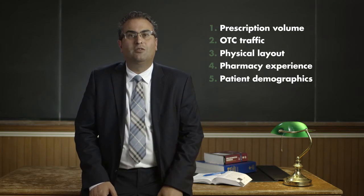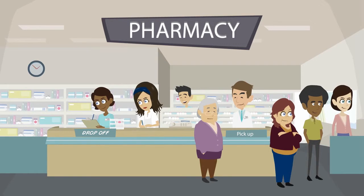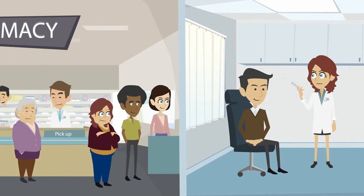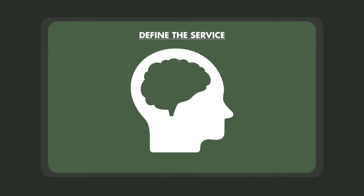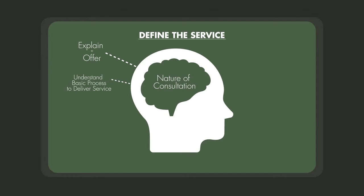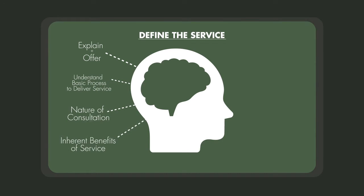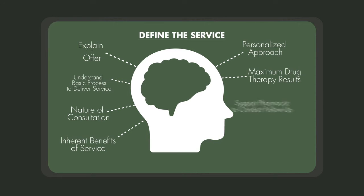Let's examine the workflow in a busy community pharmacy during flu season. In this scenario, two pharmacists are required, and one of them is busy with immunization. The workflow is efficient, uninterrupted, and seamless. In addition to diverting technical tasks, technicians can play an indirect role in the professional programs themselves. In order to do this, they must be able to define the service, explain why they are offering it to the patient, understand basic processes to deliver the service, describe the nature of the consultation, duration of appointments, and items covered, explain the inherent benefits of the service, promote a personalized approach, target maximum results and drug therapies, support through regular follow-up, and provide answers to questions. The technician must also screen for patients, notify the pharmacist about eligible patients, call patients to remind them about appointments, and provide other follow-up support.